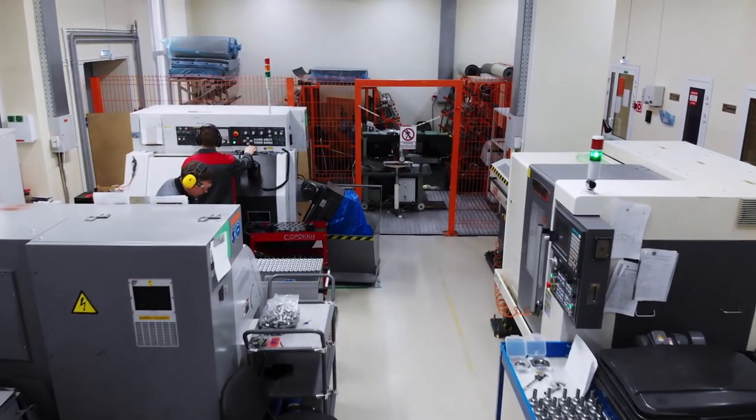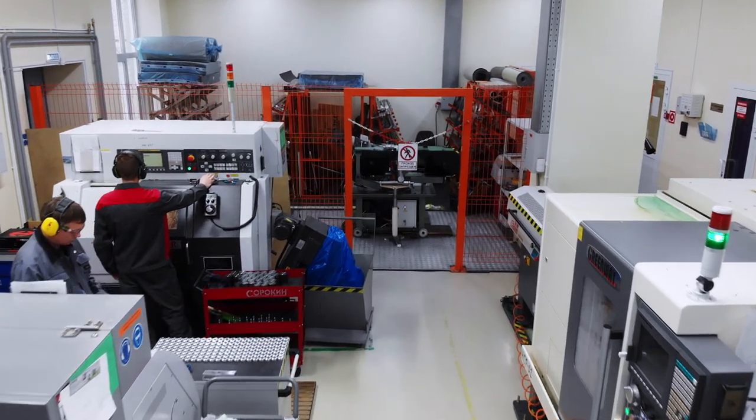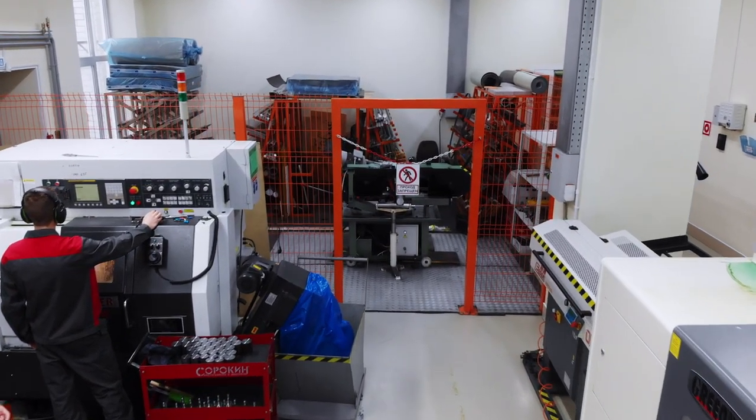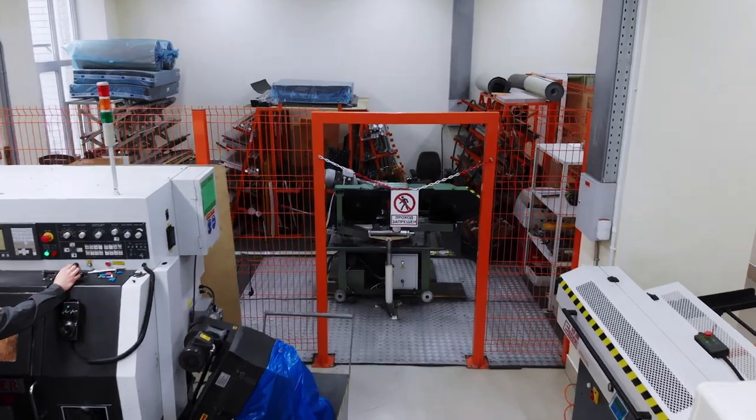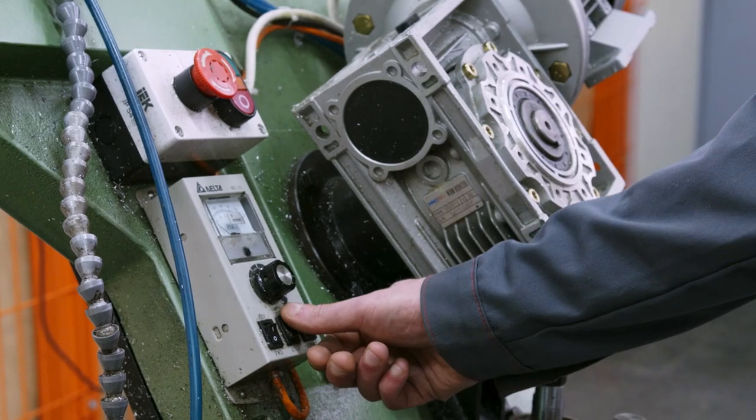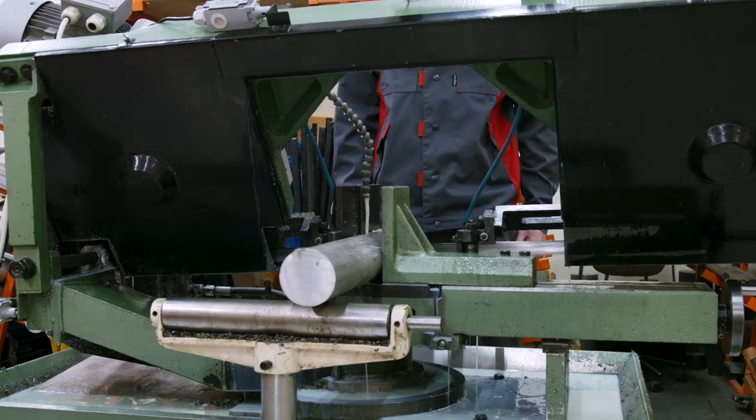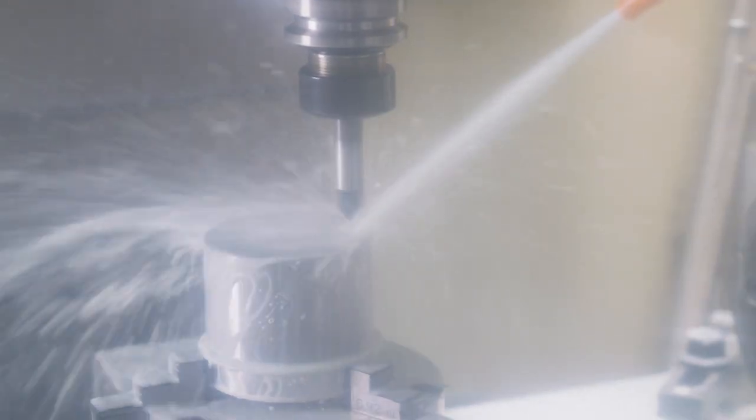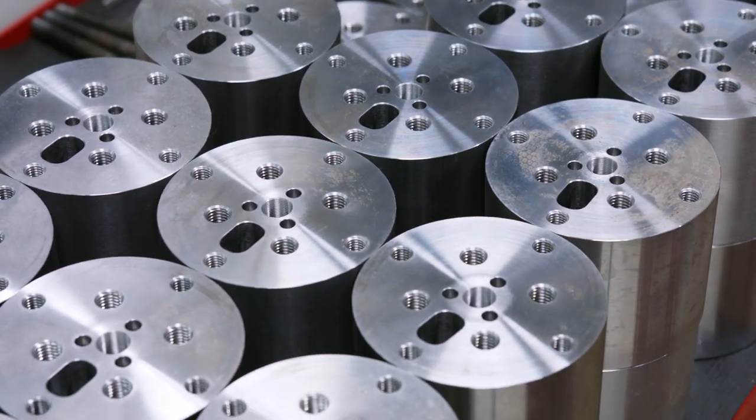At the procurement stage, the material passes the incoming quality inspection. Then, it is marked and stored until it is required. To cut workpieces, we apply the metal cutting machine. Processing a workpiece takes minimum time and requires the least possible number of transitions, which ensures the preset accuracy.